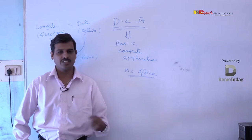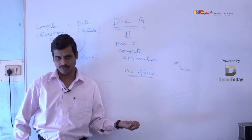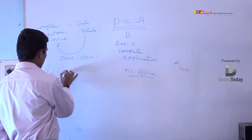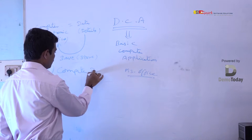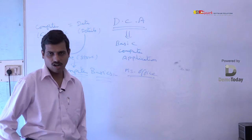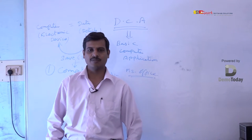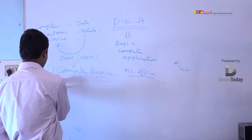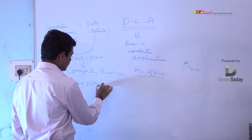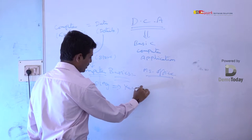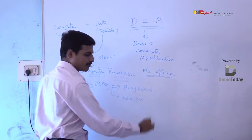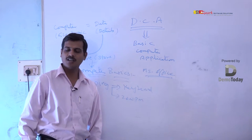Actually a computer consists of a keyboard, a mouse, and a CPU. Along with the CPU and keyboard, we are going to learn about the computer basics. So before saving, we have to know how to store information into the system. For typing information, we have to know how to type using the keyboard, and the typing speed should be 26 words per minute.